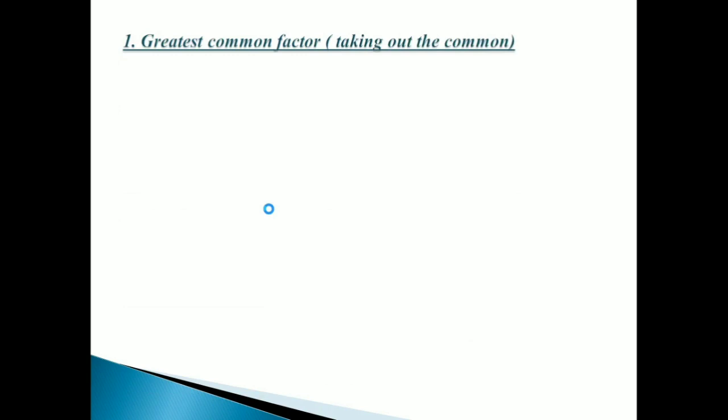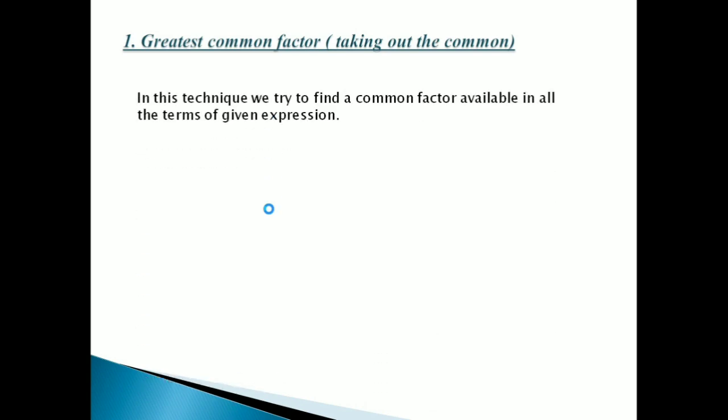So let us begin with the first technique: Greatest Common Factor, or taking out the common terms — GCF method। इस method के अंदर हम जितनी भी terms दी हुई हैं expression के अंदर, उसमें से कोई एक ऐसी term जो सब में common है, वो पूरे expression में से बाहर निकाल देते हैं। और एक bracket बनाके अंदर जो चीज़ बच गई है, वो as it is लिख देते हैं।